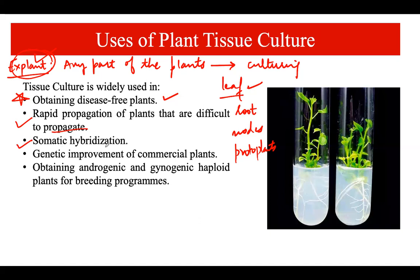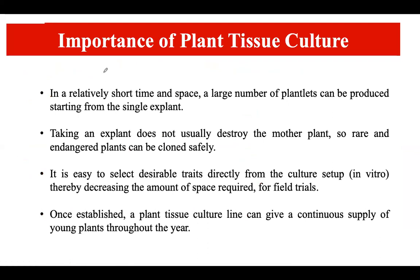We can also perform somatic hybridization, which is the process of using somatic (non-germ) cells from two different plants to create a hybrid that incorporates important traits of both plants into a single plant. Additionally, genetic improvement of commercial plants is possible — we can introduce enhanced traits through genetic modification during tissue culture. We can also obtain androgenic or gynogenic haploid plants, which is useful for breeding programs.